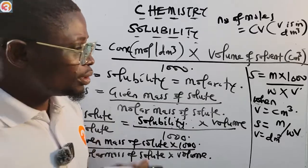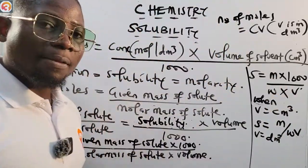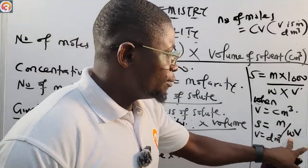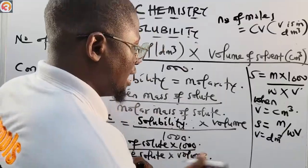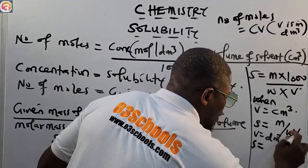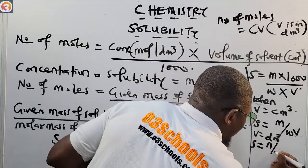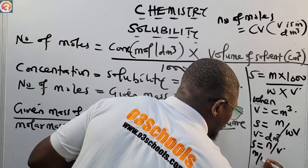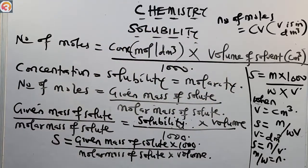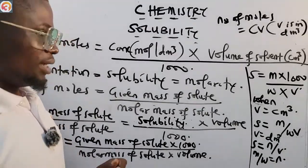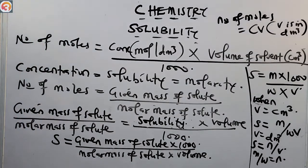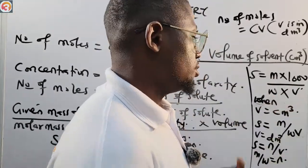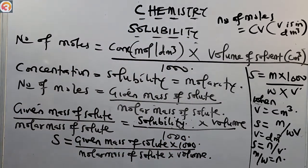Also note that m over W is mass over molar mass, which equals number of moles N. So solubility can also be written as S = N / V — number of moles over volume. This is another useful formula for solubility. N is number of moles, V is volume, m is mass, W is molar mass.